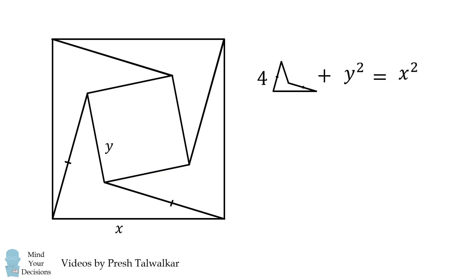So we have 4 times the area of the quadrilateral plus Y squared is equal to X squared. We can simplify this formula and we can get the area of the quadrilateral is equal to X squared minus Y squared all over 4.